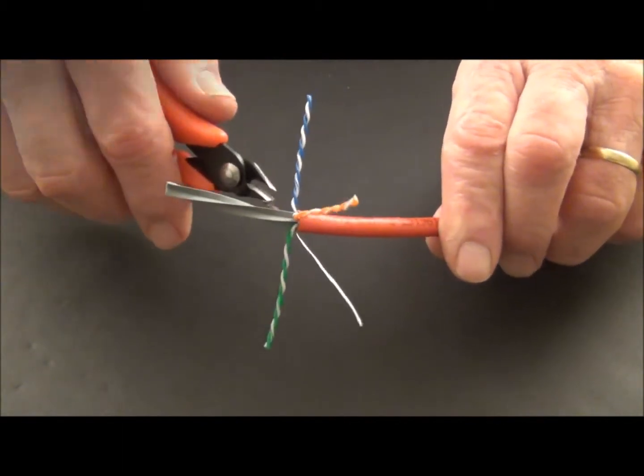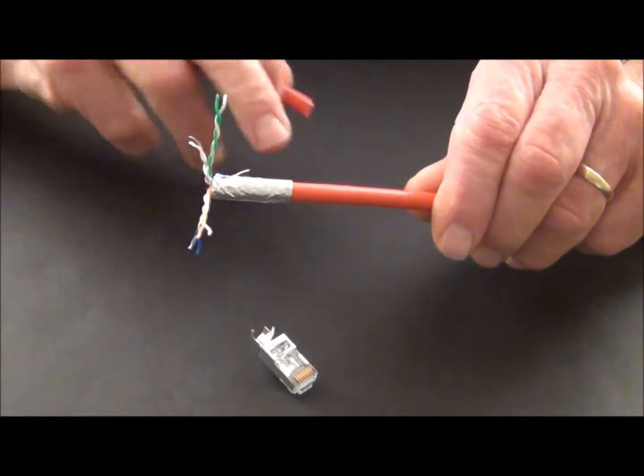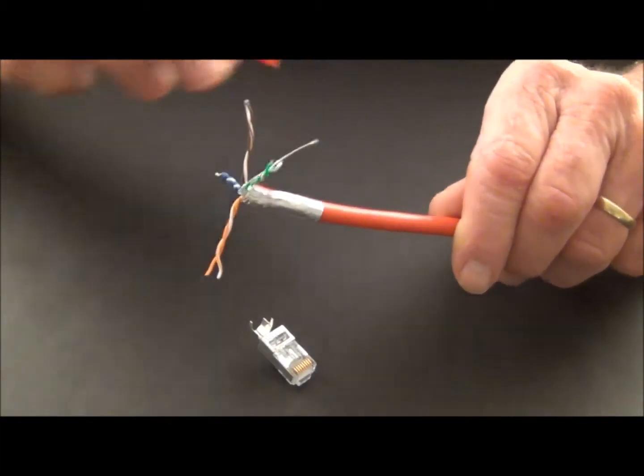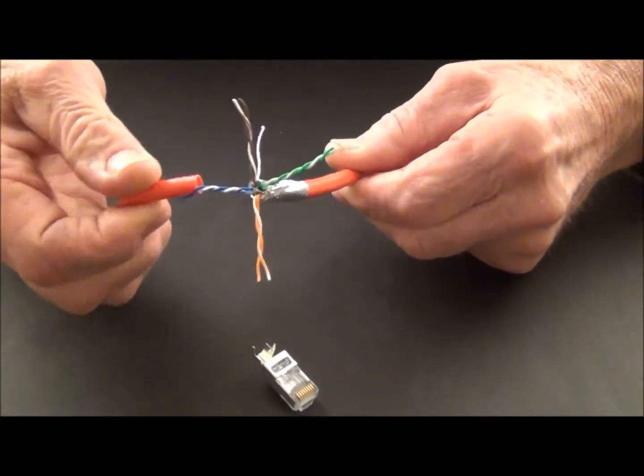And I like to use my little flush cutters. And we're going to come in and trim it. And then remove it. So the foil, I've kept intact. Brought it down to the end of the jacket. Folded it all the way back. I've twisted my drain wire so that the strands are all together. And then I've separated my pairs. And now the next step is separating the pairs.